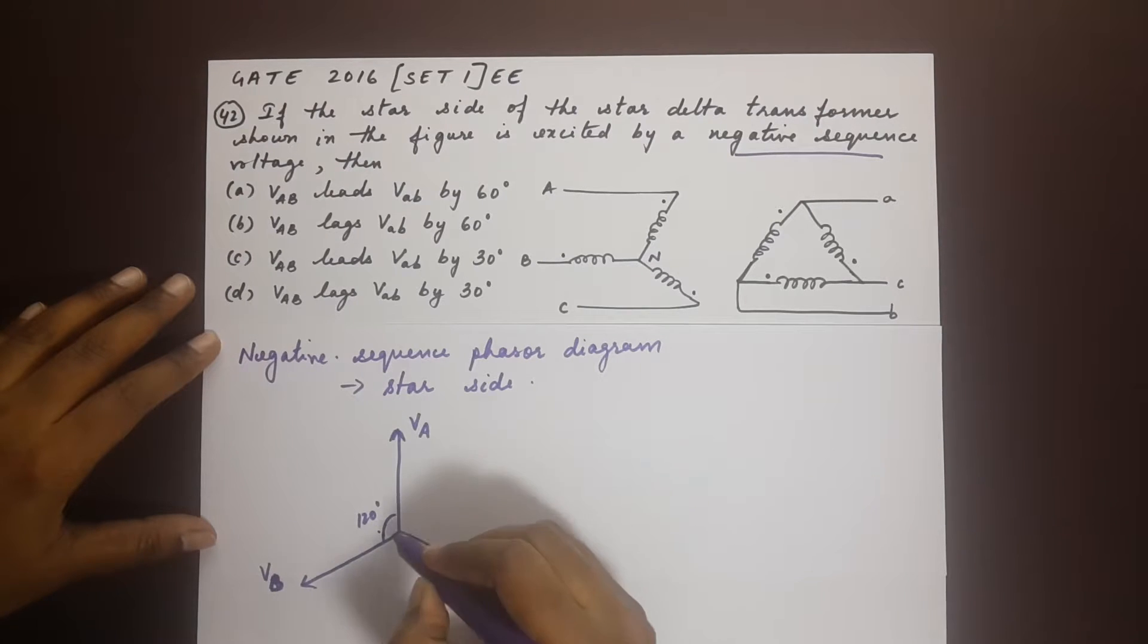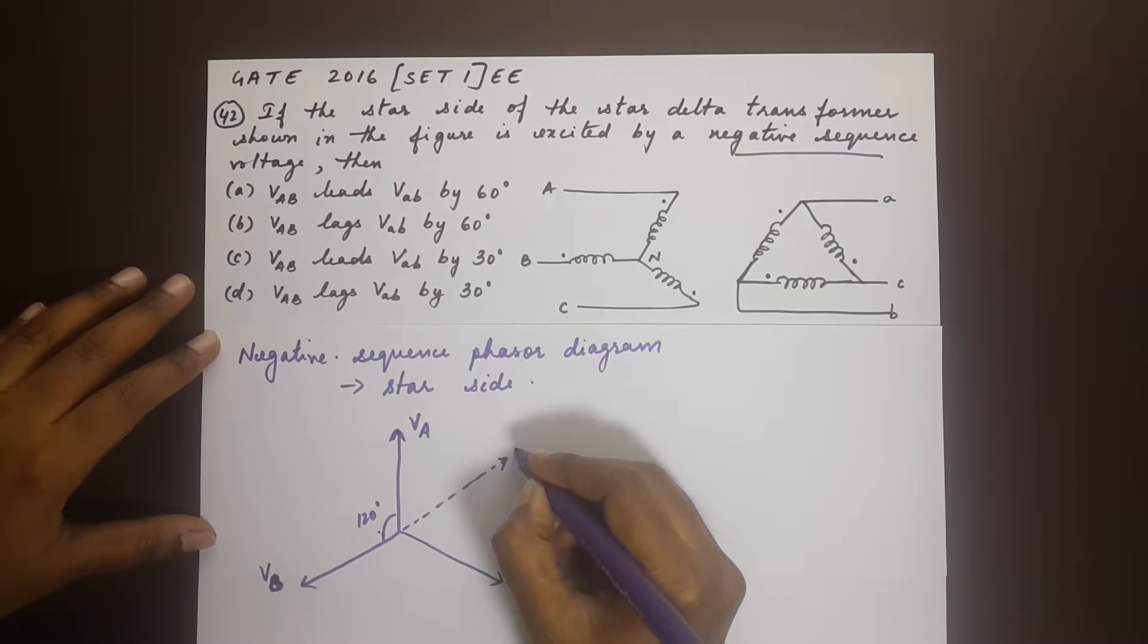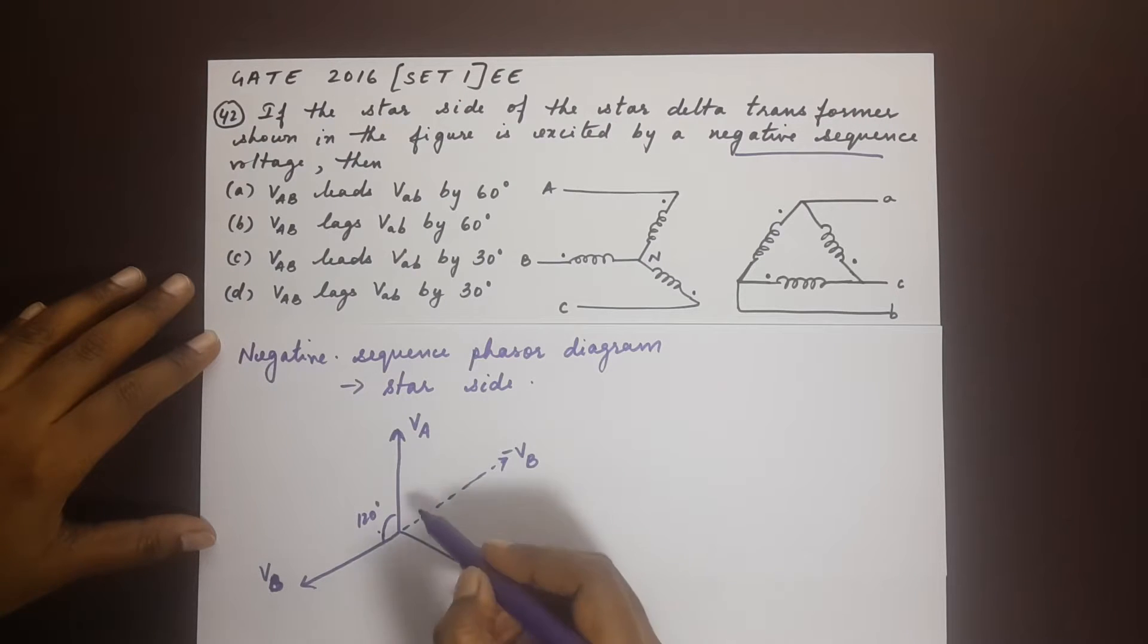So if we take the phasor opposite to represent V minus VB, we will notice that it is exactly half of the phase of VA and VC. So therefore this would be half of 120, which would be 60 degrees.